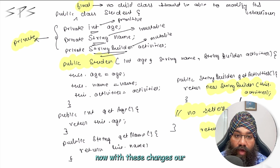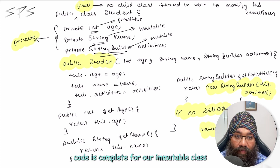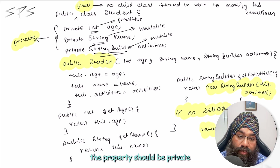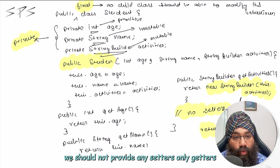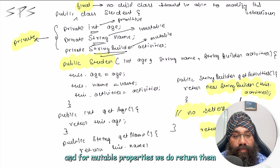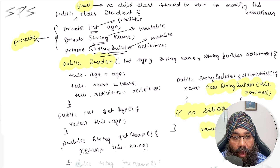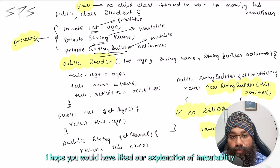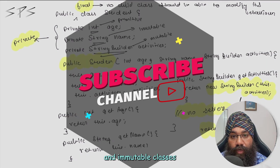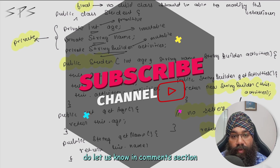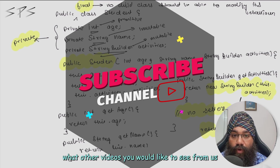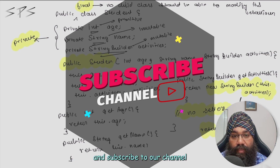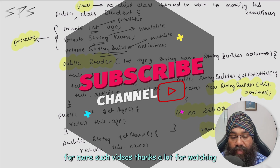With these changes our code is complete for our immutable class. We need to have final at the class level, the properties should be private, we should not provide any setters — only getters — and for mutable properties we return a copy of the property and not the actual object. I hope you liked our explanation of immutability and immutable classes. Do let us know in the comment section what other videos you would like to see from us, and we will be very happy if you like this video and subscribe to our channel for more such videos. Thanks a lot for watching.